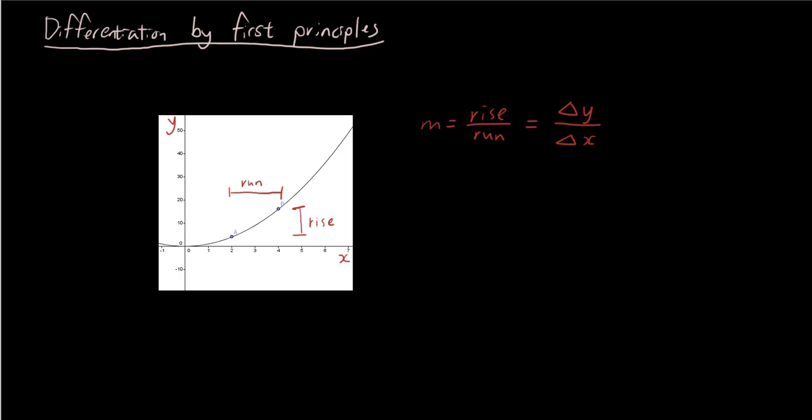Now, because we are trying to find an algebraic solution to the gradient, an algebraic equation for the gradient, we can't just substitute numbers in. We are going to use symbols to represent the gradient. The gradient is described using the equation m equals y2 minus y1 over x2 minus x1.